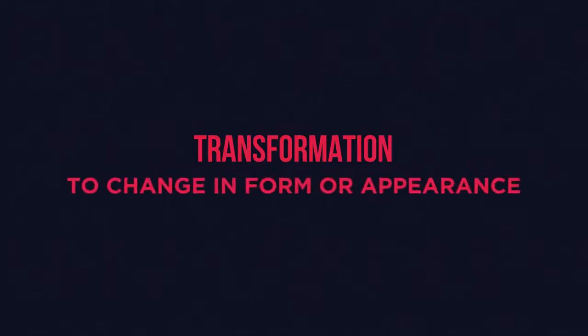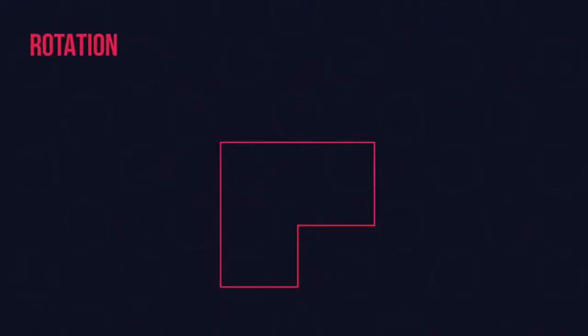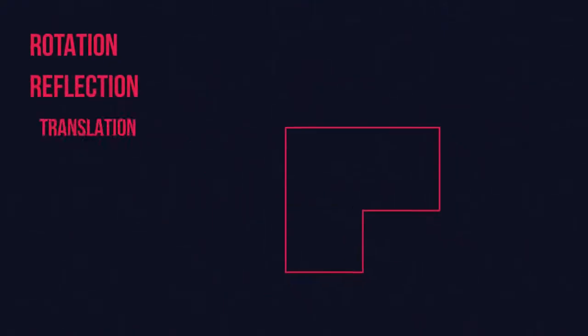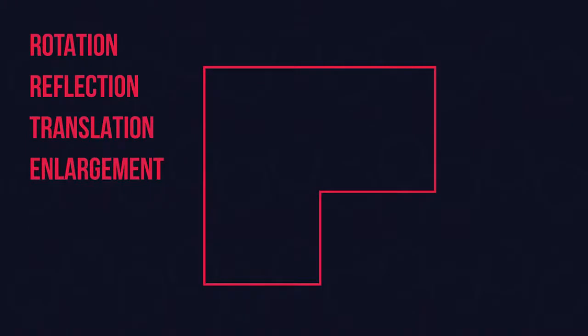What do you think the word transformation means? It means to change in form or appearance, which is actually pretty much what it also means in maths. When a shape is transformed, its appearance changes. It can be rotated, reflected, translated, or enlarged. In maths, we learn about these four different types of transformation.